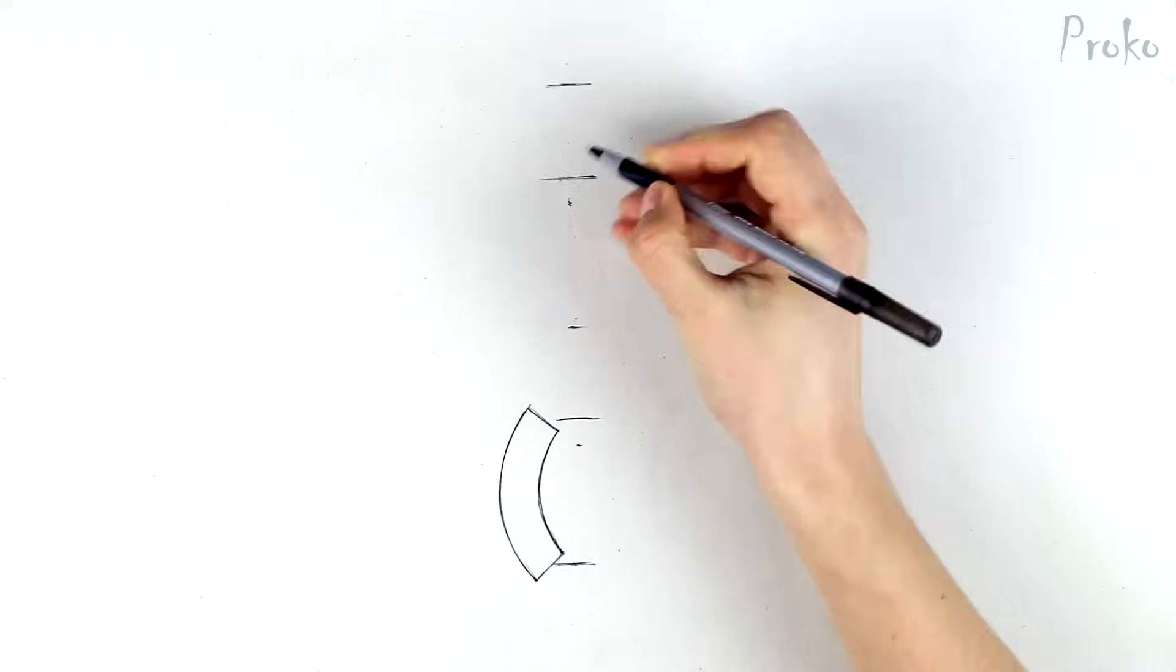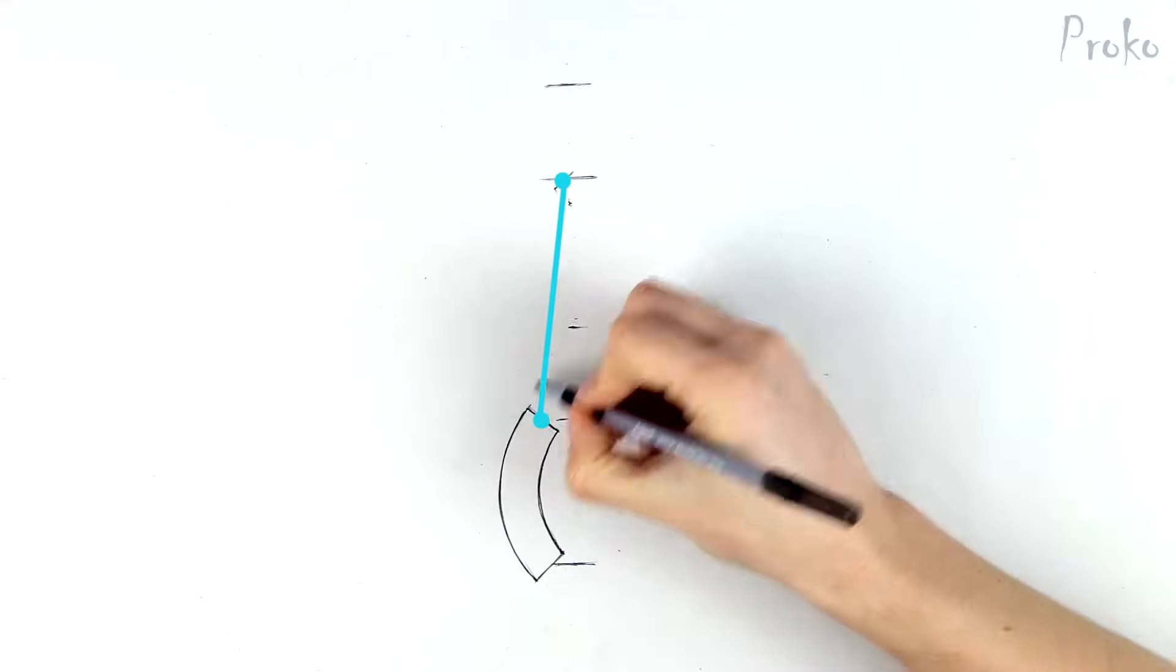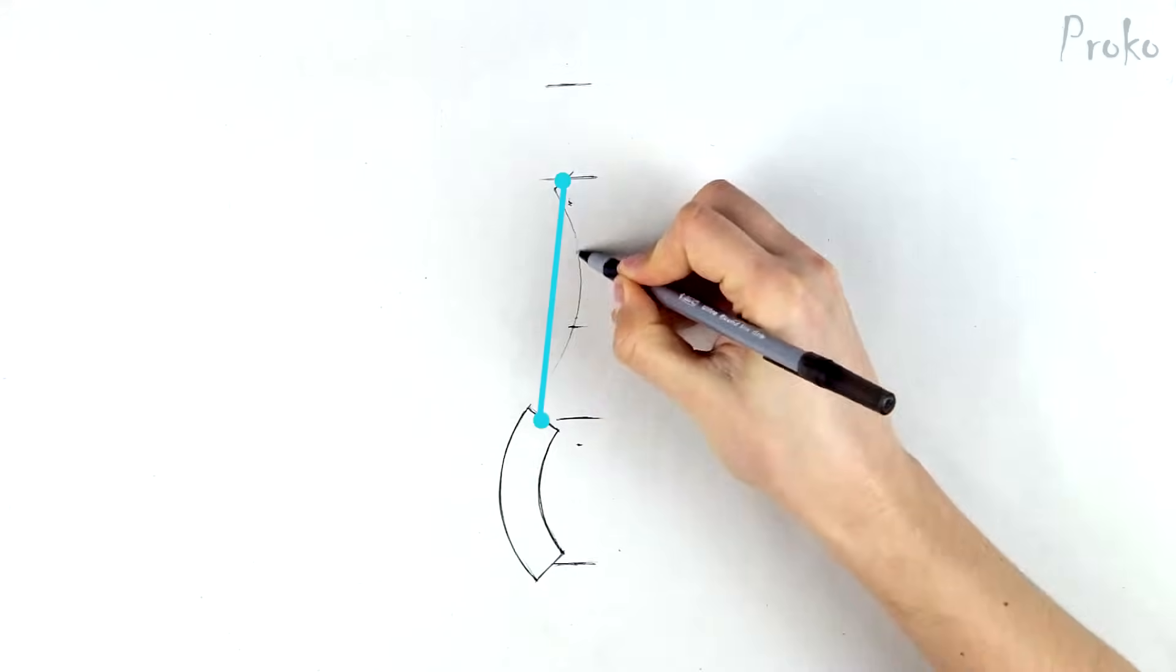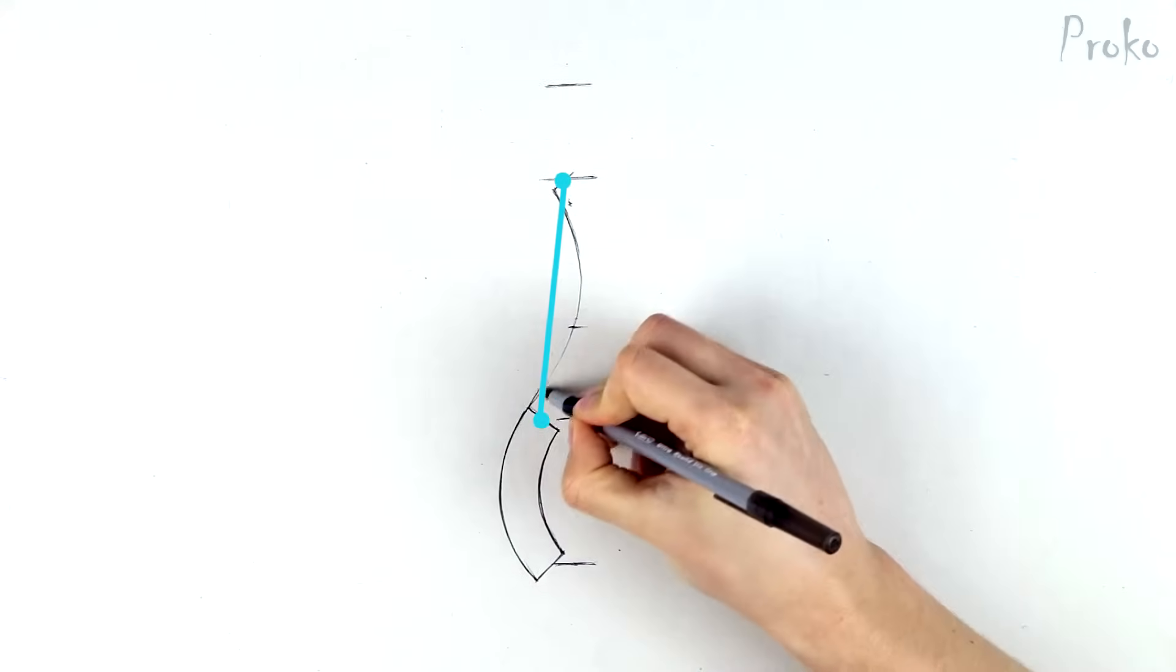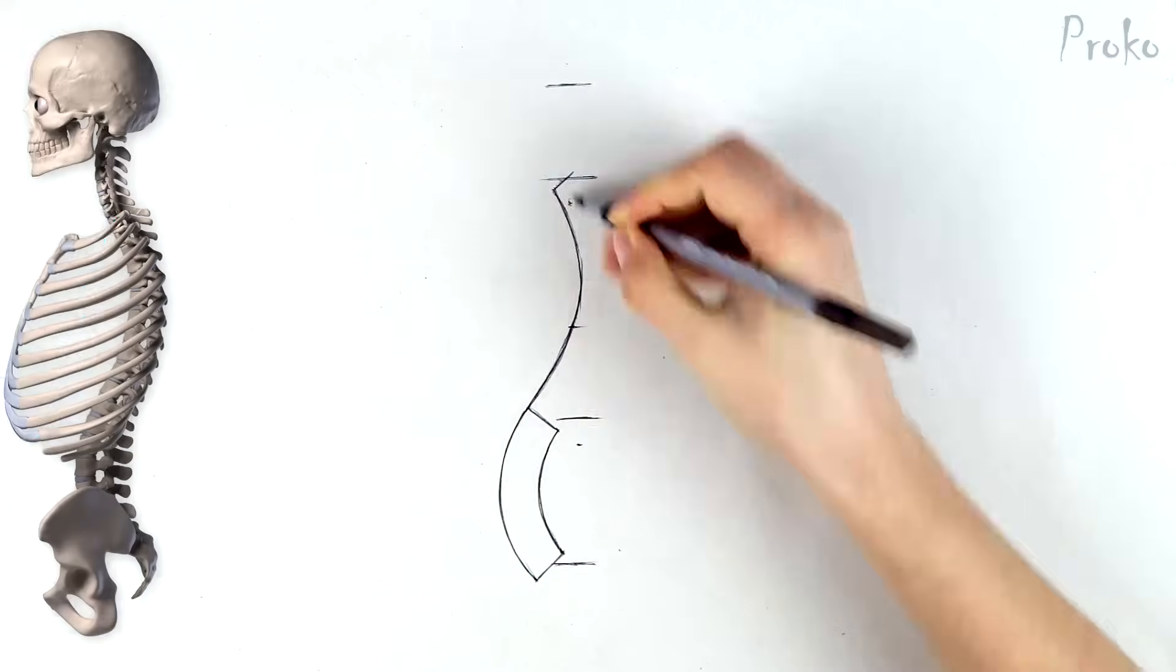The thoracic section, however, is tilted backward. So, the top will be farther back than the bottom, resulting in the backward lean of the ribcage.